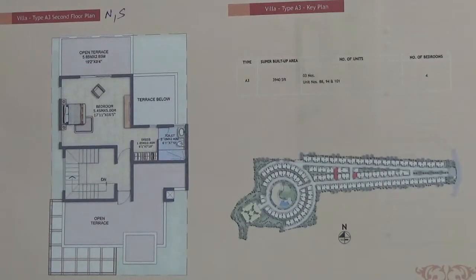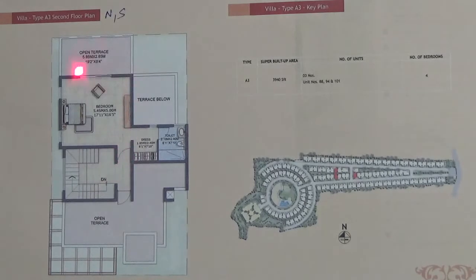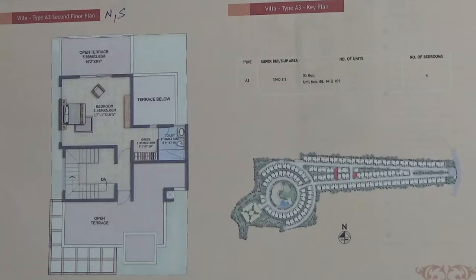This is the second floor plan of the A3 type villa. There is a fourth bedroom on the top with access to the terrace. There is also one more open terrace on the second floor.